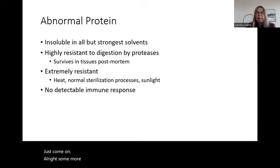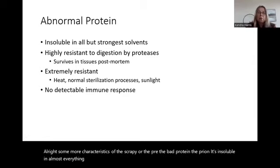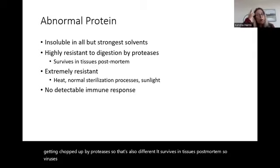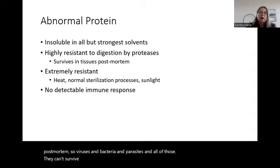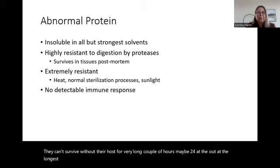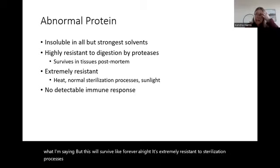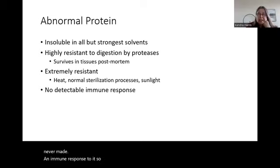The prion — the bad protein — is insoluble in almost everything, which is the opposite of the normal one, and it's highly resistant to being chopped up by proteases. It survives in tissues post-mortem far longer than viruses or bacteria can survive without a host. It's extremely resistant to sterilization processes, ultraviolet light, sunlight, and heat. Humans have never mounted an immune response to it; we apparently see it as something normal, which is really not helpful.